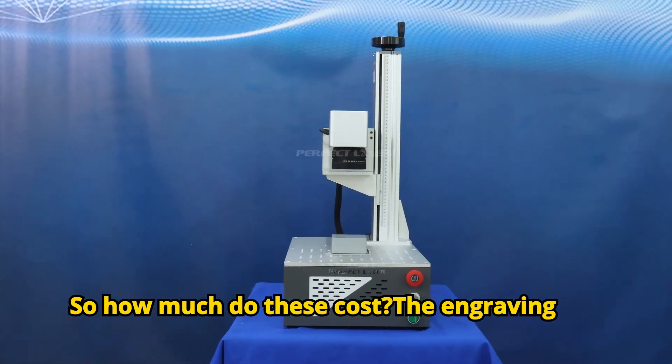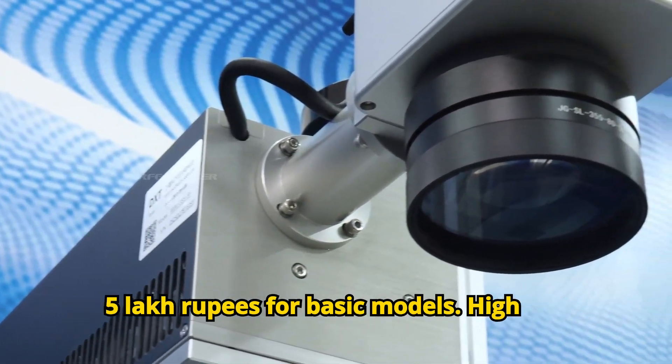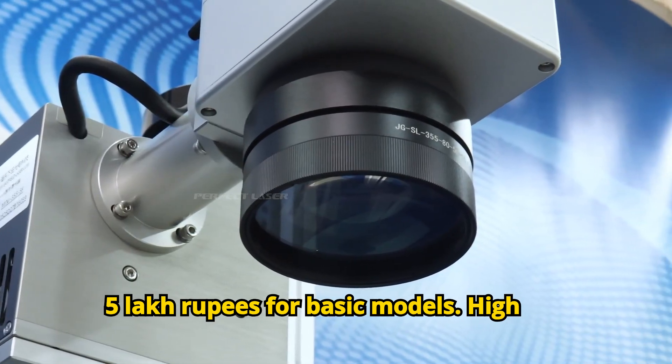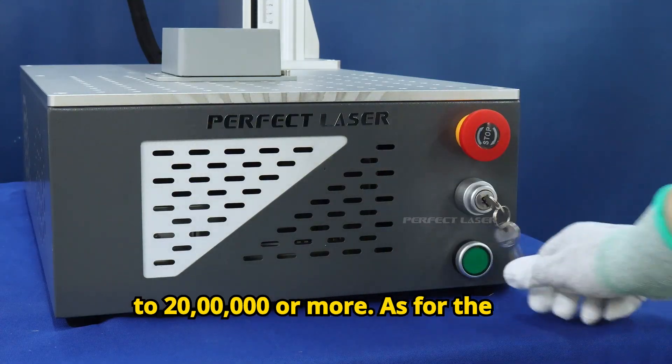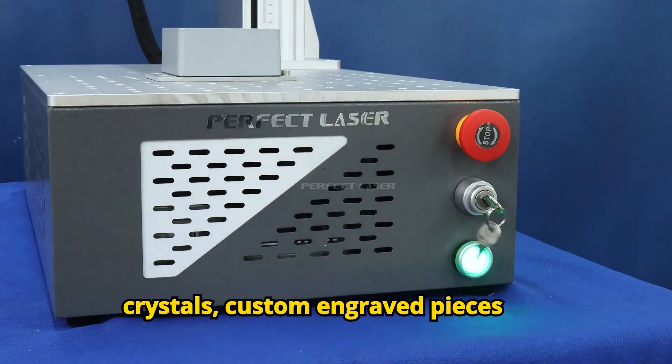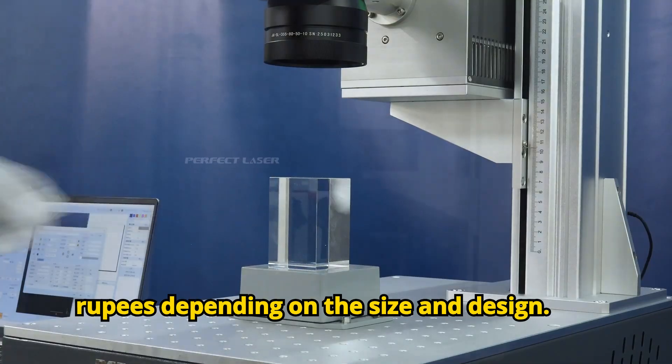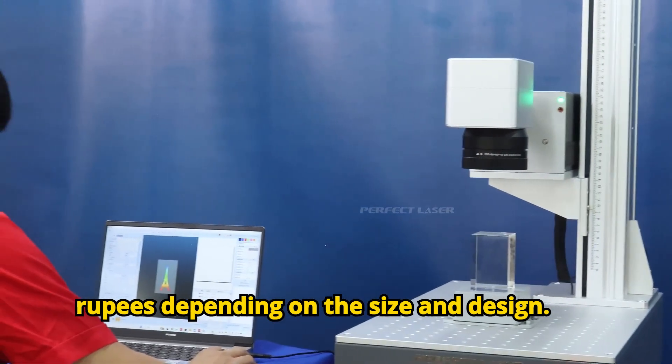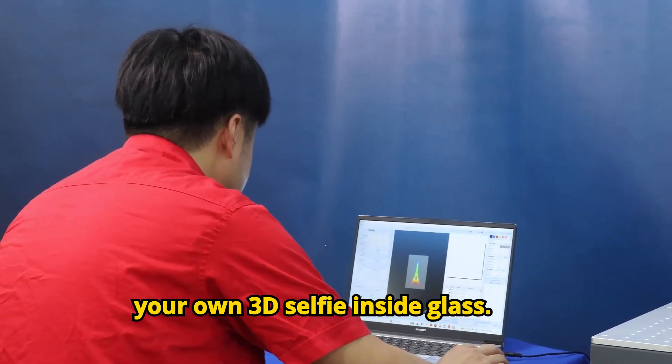So how much do these cost? The engraving machines themselves start at around 2 to 5 lakh rupees for basic models. High-end ones for industrial use can cost up to 20 lakhs or more. As for the crystals, custom engraved pieces typically cost between 500 to 5,000 rupees, depending on the size and design. Some even let you upload a photo to get your own 3D selfie inside glass.